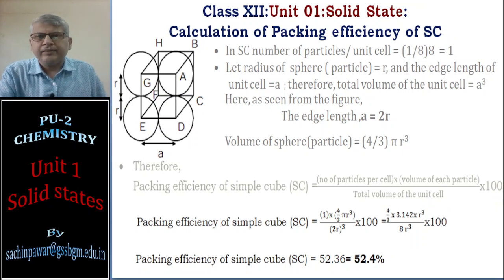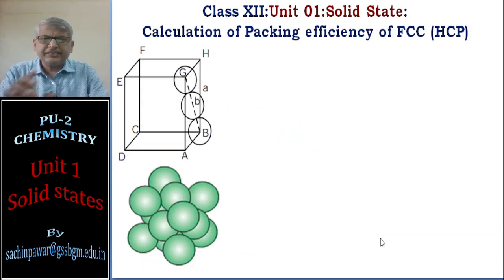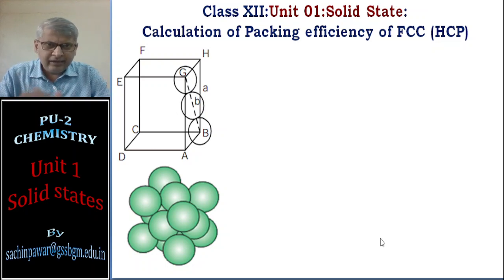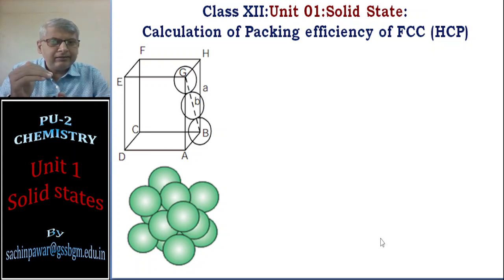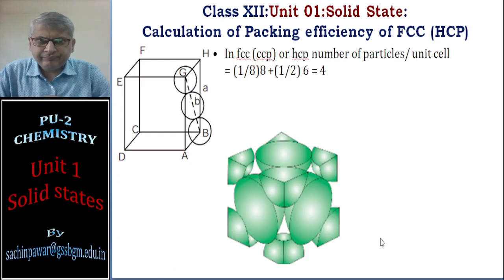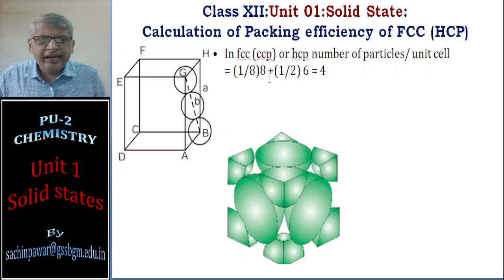Now, calculation of packing efficiency of face-centered cubic (FCC). The steps are similar. First, we find the number of particles per unit cell: there are 8 corner particles and 6 face-centered particles. The formula gives (1/8 × 8) + (1/2 × 6) = 1 + 3 = 4 particles per unit cell in FCC.